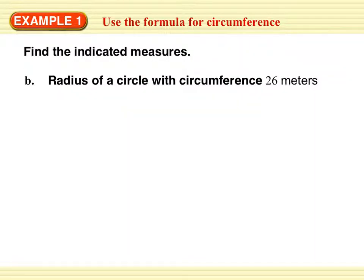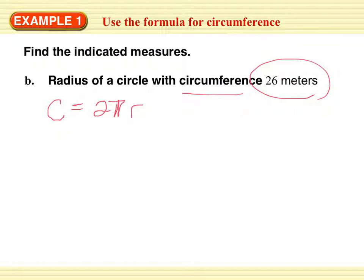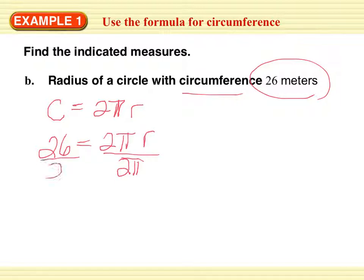Find the radius of a circle with a circumference of 26 meters. We're given the circumference, so we're going to use C equals 2 pi R and plug in what we know. C is 26, equals 2 pi times R. We're solving for R, so divide both sides by 2 pi. R equals approximately 4.14 meters.